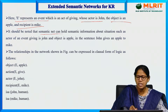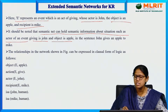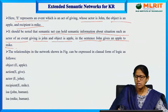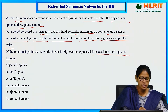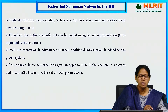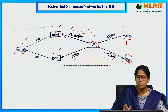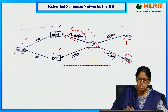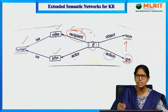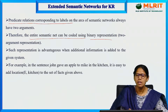It should be noted that the semantic net can hold semantic information about the situation: actor of the event giving is John, object is apple, and the sentence is 'John gives an apple to Mike.' We can express the clausal form — object E apple, action E give, actor E John — this is the event that is occurring. Recipient E Mike, Mike ISA human, John ISA human. The predicate relations correspond to the labels on the arcs. The entire semantic net can be coded using binary representation: E apple, E action, E actor, and so on.